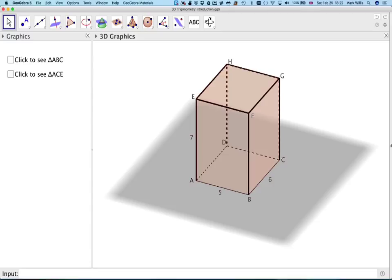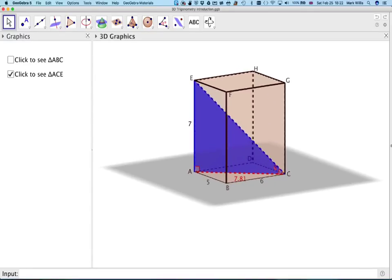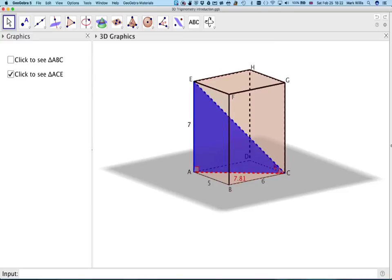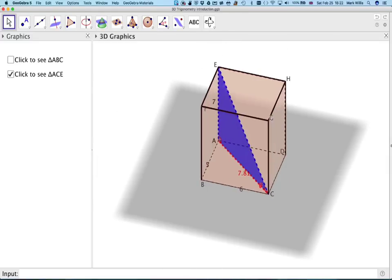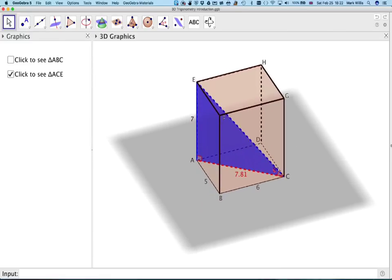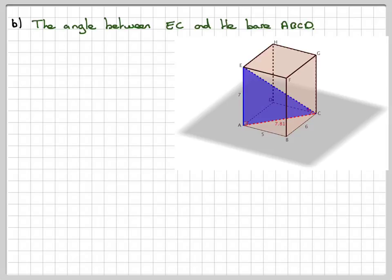So the triangle that we need to use is this one here, the blue one. And I know that this distance is 7, and I know that this distance here is 7.81, though it's better to use the square root of 61 because it's more accurate. And the angle that I want to find is this one here, theta. This is the angle that the line EC makes with the base of the rectangular box. So you can see it from different angles here. And, like I said, you should use the square root of 61 for this length here, then you don't get a rounding error.